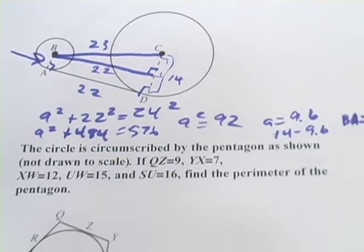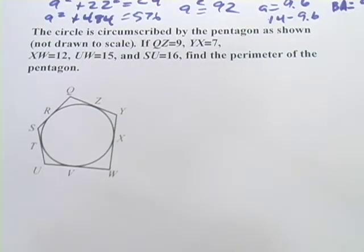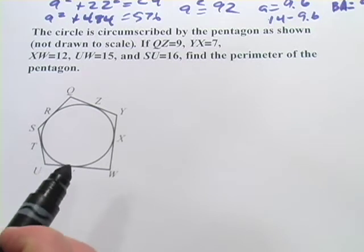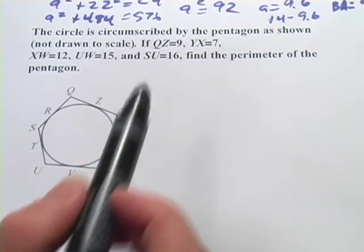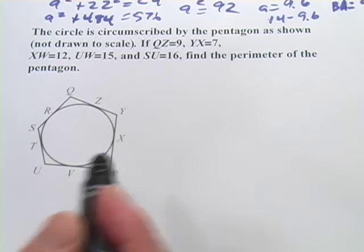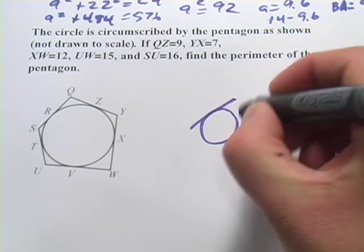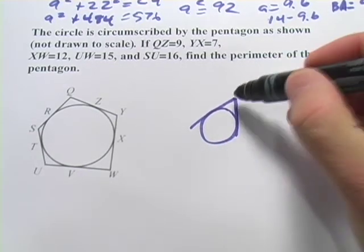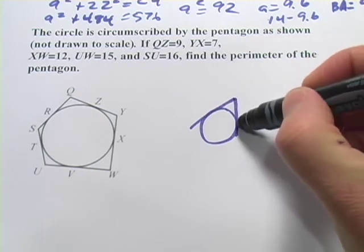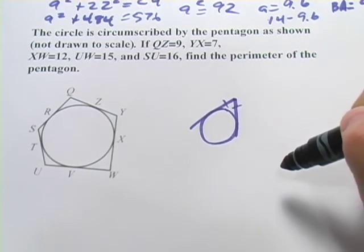Alright let's look at a different type of tangent problem. So this one says the circle is circumscribed by the pentagon as shown and then it starts giving us some values for some of the sides. What you need to know here to solve this one correctly is that if you have a circle and you have two lines that are tangent, the distance from the point where they intersect to the circle are going to be the same on both sides. That's the key for this one.